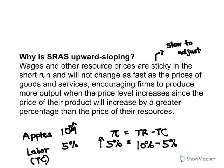Total cost isn't increasing as fast as total revenue because of the sticky, slow-to-adjust nature of resource prices in the short run. That explains why short-run aggregate supply is upward sloping: with more inflation, revenues are going to increase faster than costs because the price of the product being sold increases faster than the cost of the resources used to make that product.